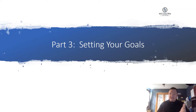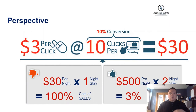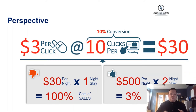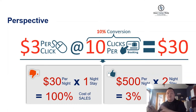When we talk about setting goals, we have to think about perspective. Let's say you have a $3 cost per click at a 10% conversion rate — that means 10 clicks to get a booking times $3 each, which becomes a $30 cost of sale. On a $30 nightly rate, that's a 100% cost of sale. That seems like a problem, but it was actually okay for Omega's Resort Casino in Las Vegas, because they needed that direct booking so they could wrap their arms around the guest and get them into their Players Club programs.